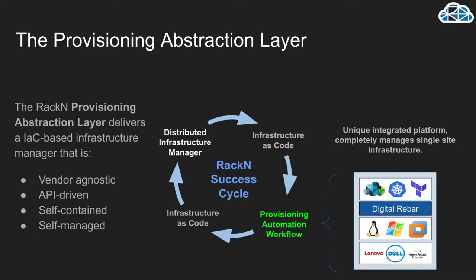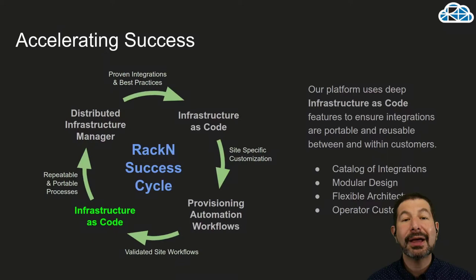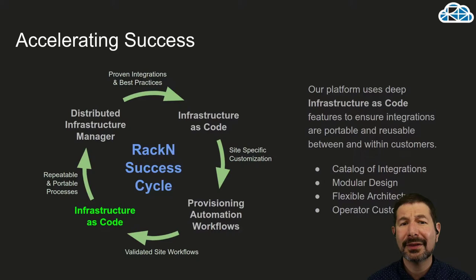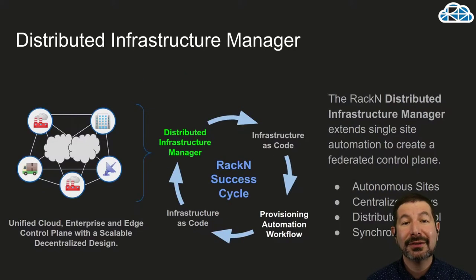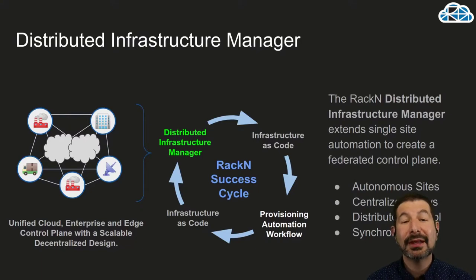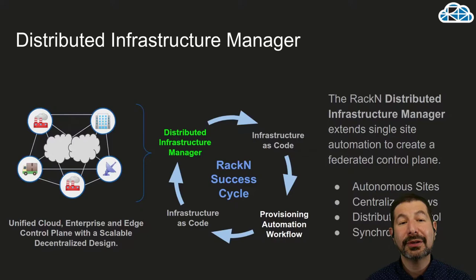From there, our provisioning automation workflow system — which I think of as a provisioning abstraction layer — allows you to manage your site completely. You create a fully autonomous site with everything possible automated, put into a system documented as infrastructure as code, which allows you to repeat the success across every site you have. Where there are variations between your sites due to different infrastructure types or locations, we have accommodated that in the designs. Our technology has specific distributed infrastructure components that enable you to repeat your patterns and take success from one site across your entire infrastructure.